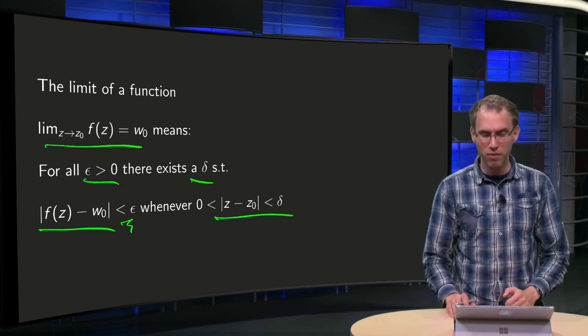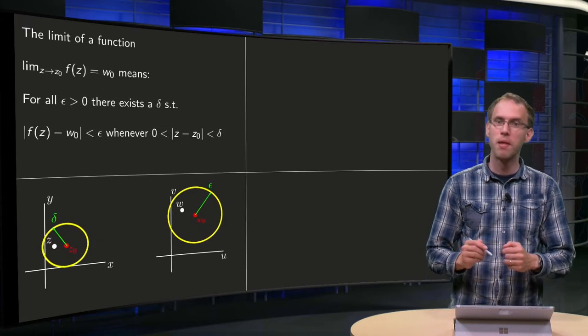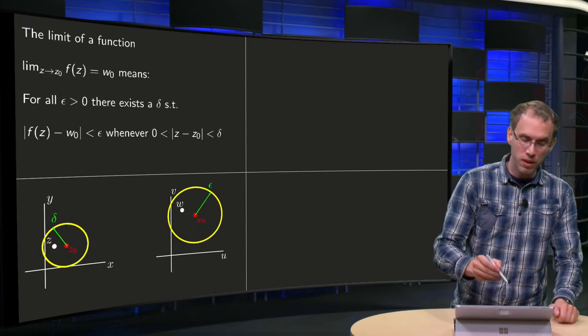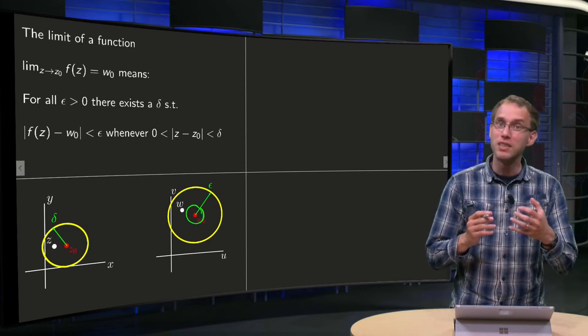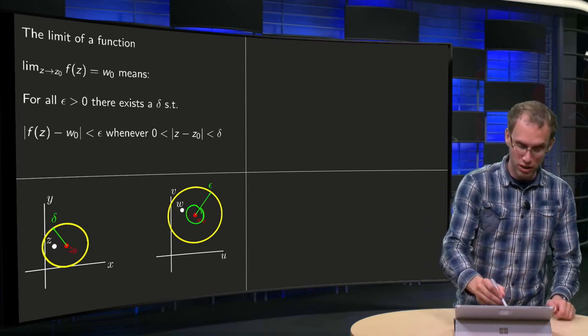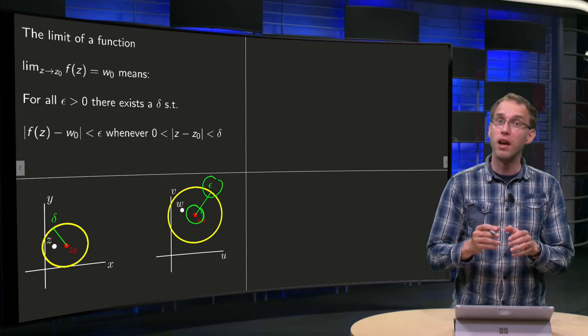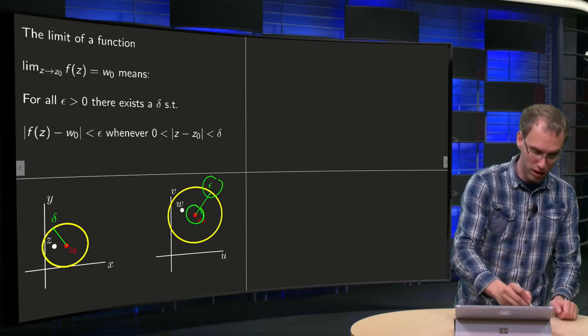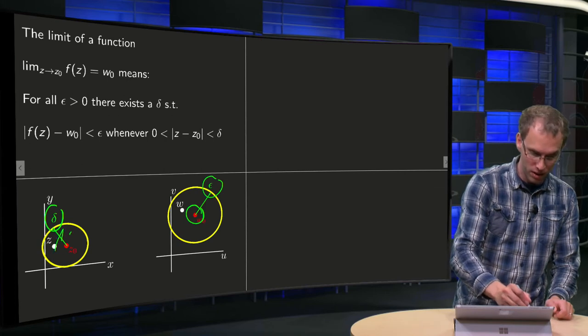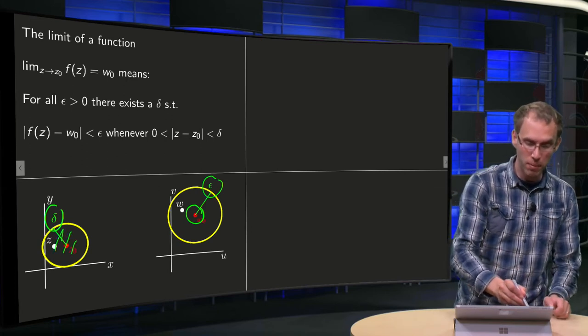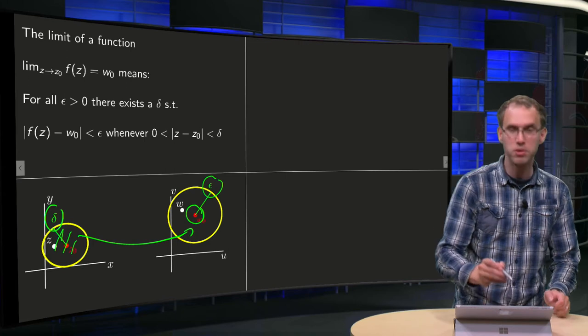So let's look at it graphically. What does this mean? Well, here we have our w₀, and it means that for any radius over here, you can find another radius over here such that all values which are in this region are mapped inside the ε circle.